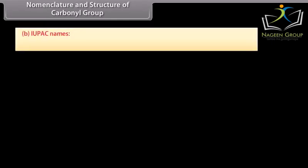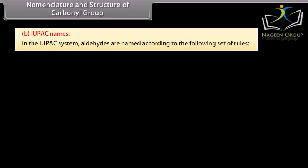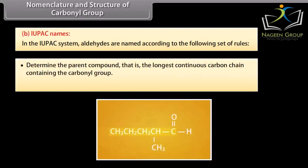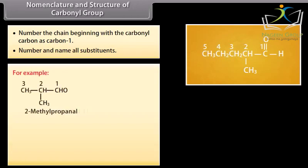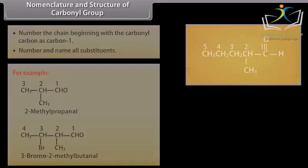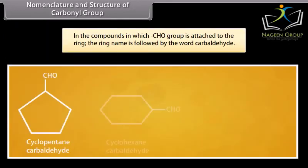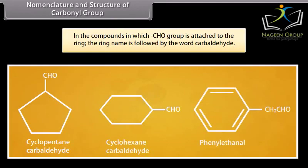IUPAC names. In the IUPAC system, aldehydes are named according to the following rules: determine the parent compound, that is the longest continuous carbon chain containing the carbonyl group; replace the final '-e' of the parent alkane with '-al'; number the chain beginning with the carbonyl carbon as carbon 1; and number and name all substituents. In compounds in which the aldehyde group is attached to a ring, the ring name is followed by the word 'carbaldehyde'.